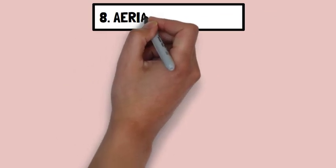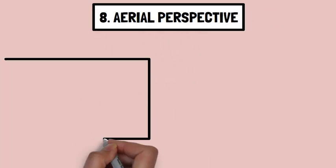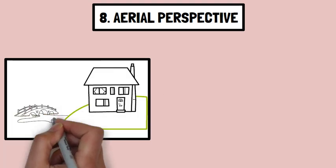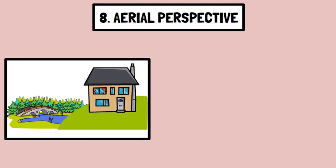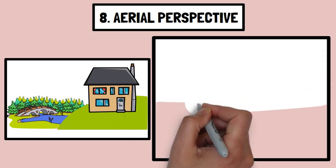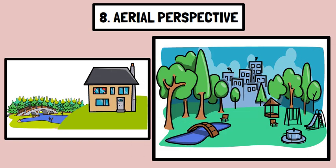Number eight, aerial perspective, also known as atmospheric perspective. Distant objects appear hazier and bluer due to the scattering of light by the atmosphere. For example, when looking at a distant city skyline, the buildings appear less sharp and slightly bluish compared to nearby objects.